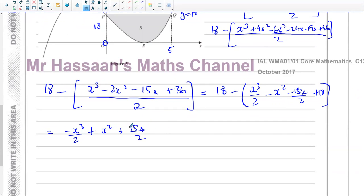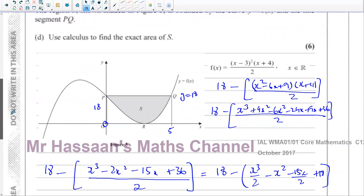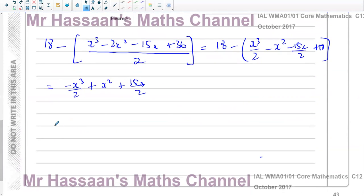Okay, so that is when you subtract these two equations from each other. So if I integrate now this, between 0 and 5, that should give me the area under the curve. minus x cubed over 2 plus x squared plus 15x over 2 with respect to x. I'm integrating this with respect to x between the limits of 0 and 5.